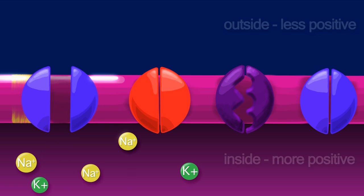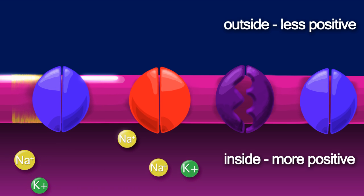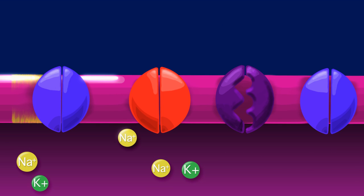The neuron is now depolarized, meaning the inside of the cell is now more positive than the outside. The voltage of the cell when it is depolarized is around negative 50 millivolts.